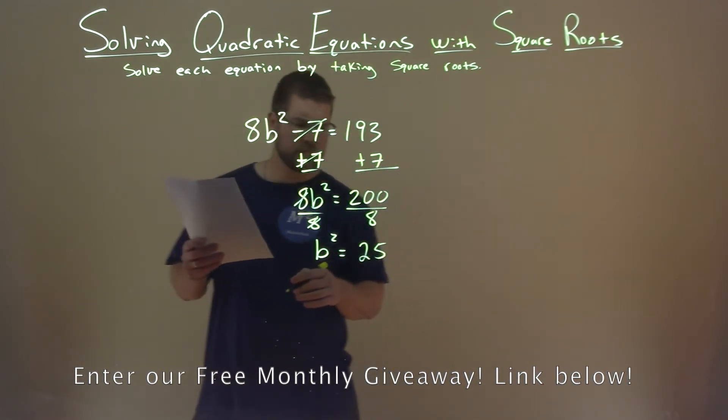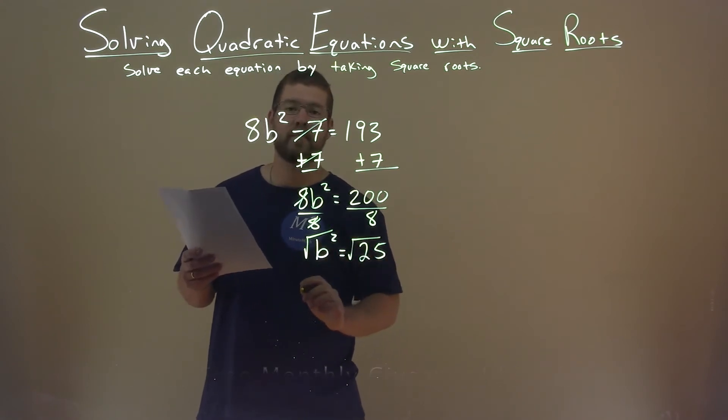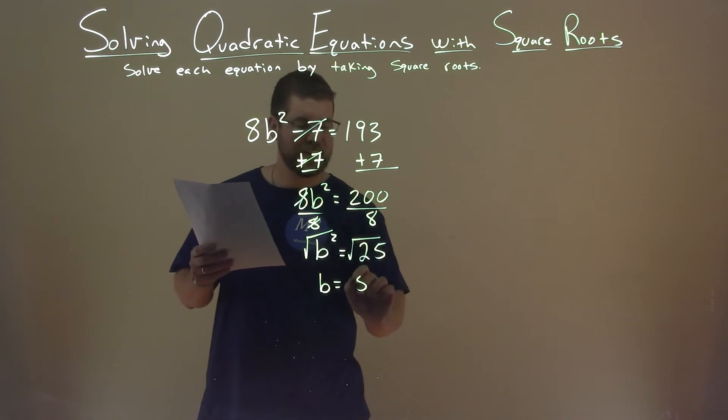Now we have b squared. To get rid of that, we take the square root of both sides. b is now by itself, and the square root of 25 is 5.